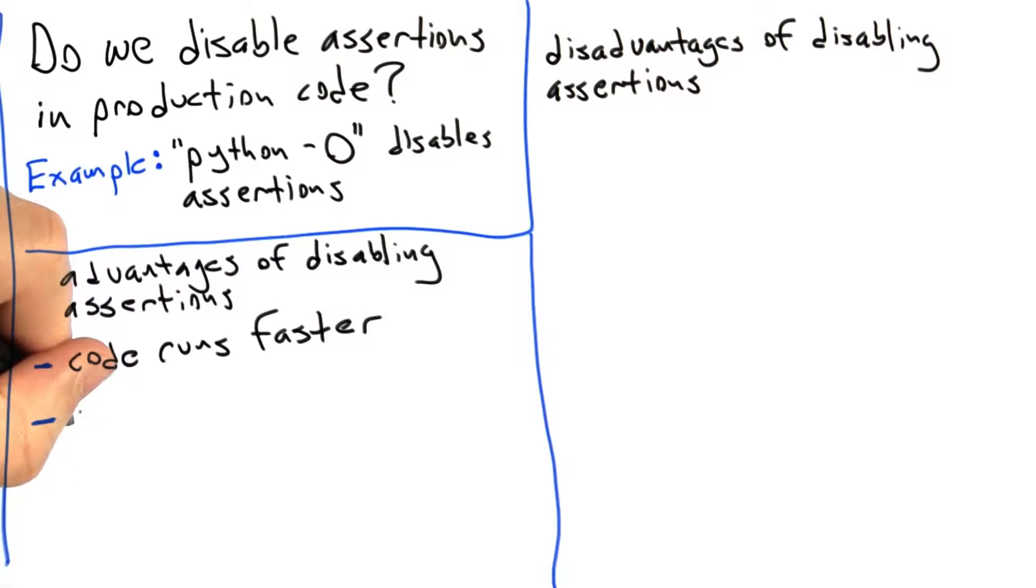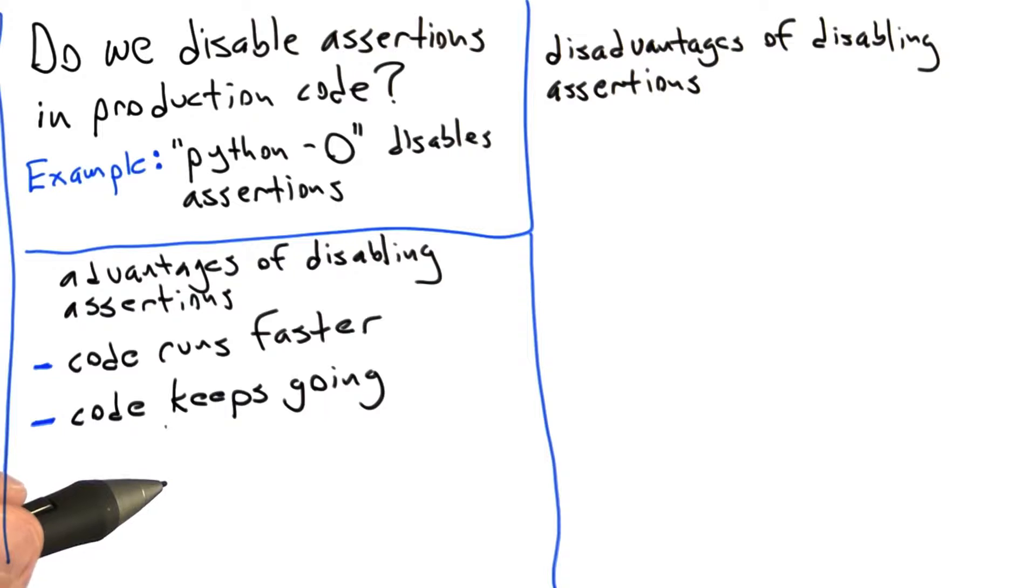is that code running without assertions is less likely to stop running. So the code keeps going even after some sort of condition is found within the code that would have triggered an assertion violation if assertions had been enabled.